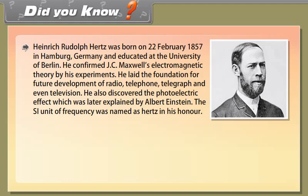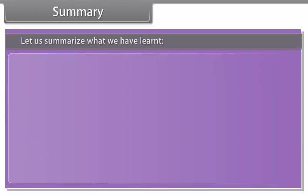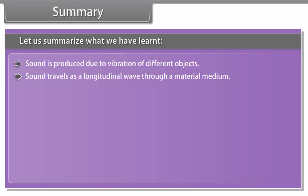The eardrum moves inward and outward as the compression or rarefaction reaches it. In this way the eardrum vibrates. These vibrations are amplified by the three bones, namely the hammer, anvil, and stirrup in the middle ear. The middle ear transmits these vibrations to the inner ear. Inside the inner ear, the vibrations or the pressure variations are converted into electrical signals by the cochlea. These electrical signals are sent to the brain via the auditory nerve and the brain interprets them as sound.